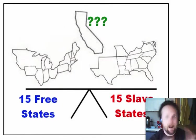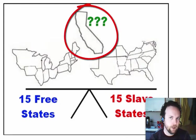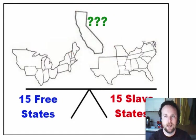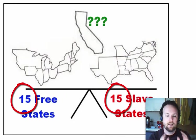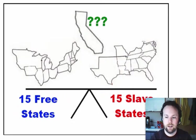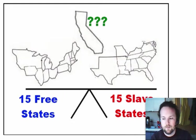A compromise of some sort seemed to be the only solution. For a while after the Missouri Compromise, states were able to enter the Union very peacefully, but when California asked to enter in 1850, all the problems from 1820 came right back up. In 1849, there were 15 slave states and 15 free states, giving a balance in the Senate that was very important. California's admission would tip the balance to the free states.